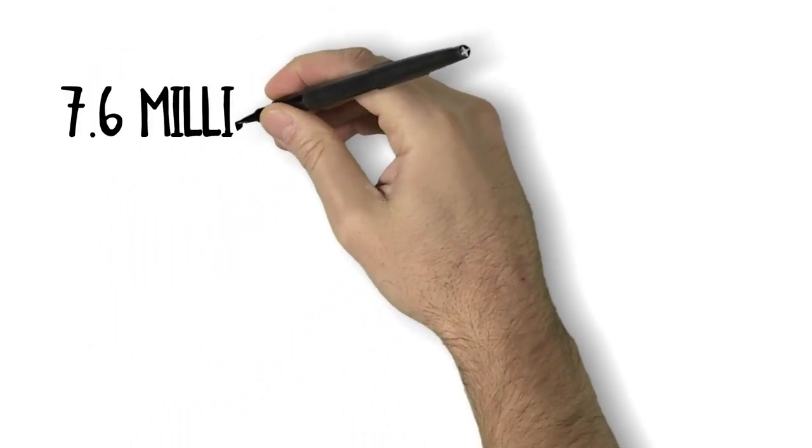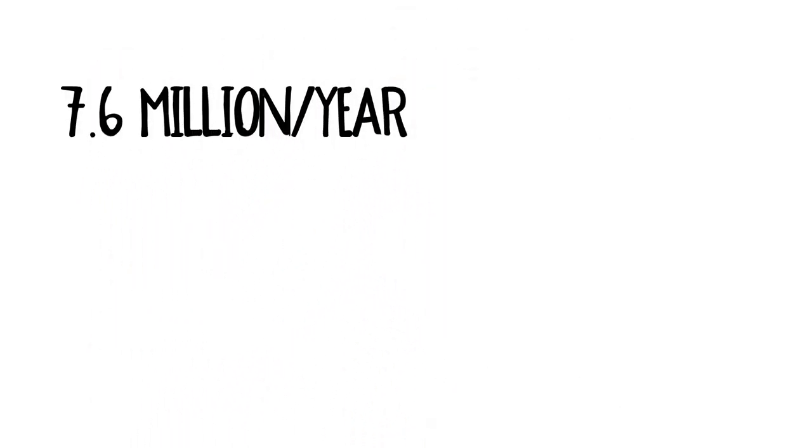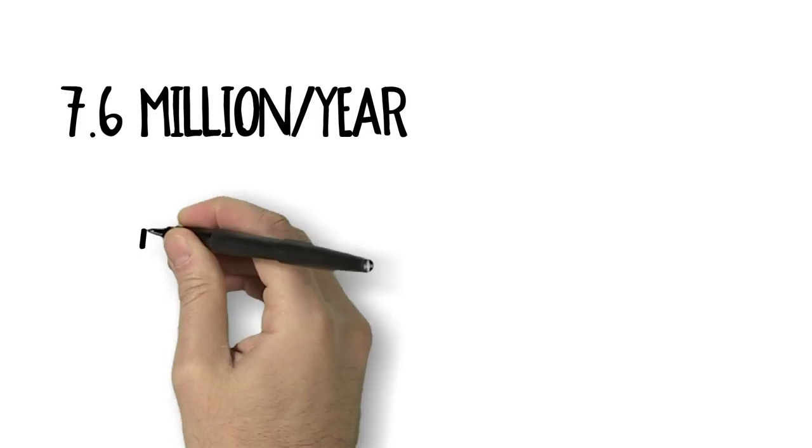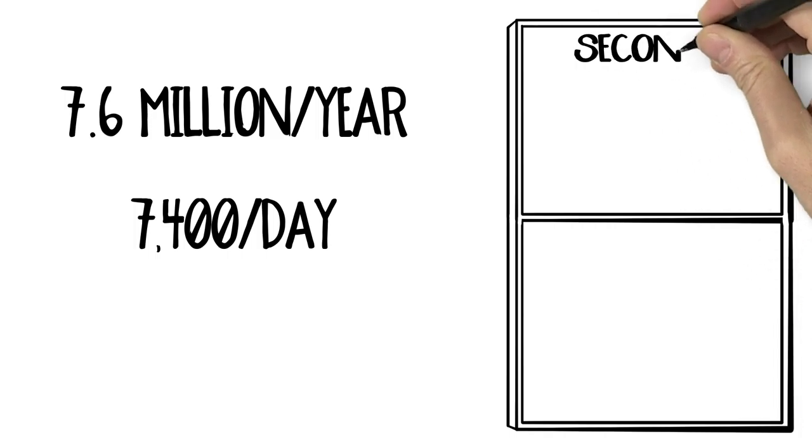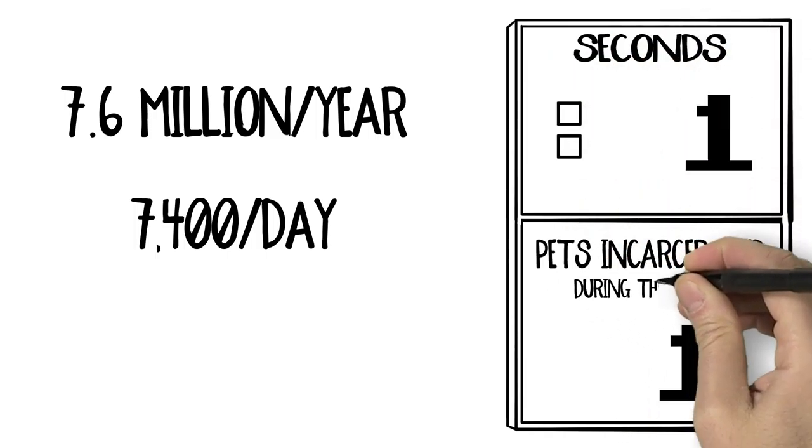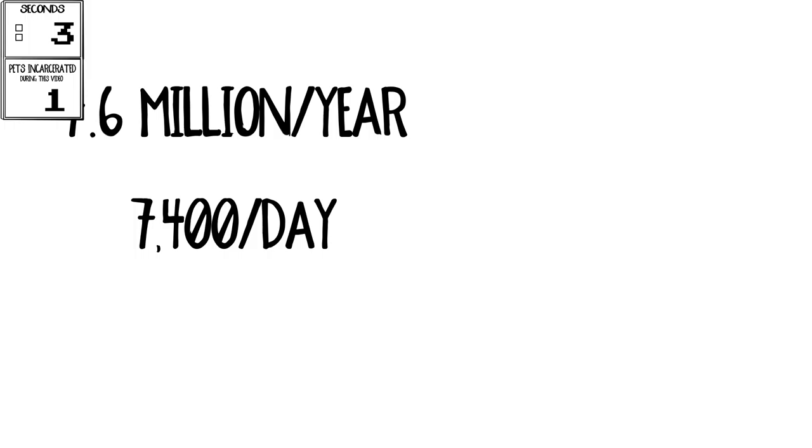Every year an estimated 7.6 million pets end up in shelters. That's 7,400 per day. So in the next 12 seconds it takes to speak this sentence, another pet will enter a shelter where 70% will never make it out alive.